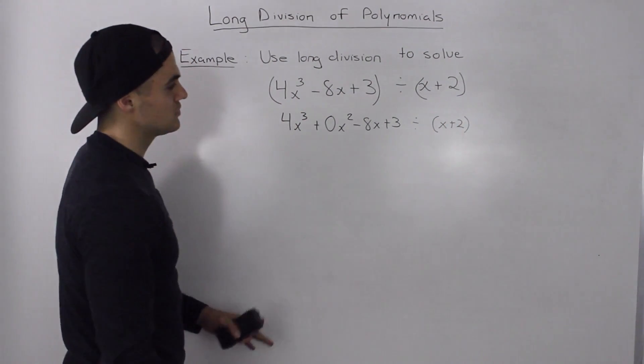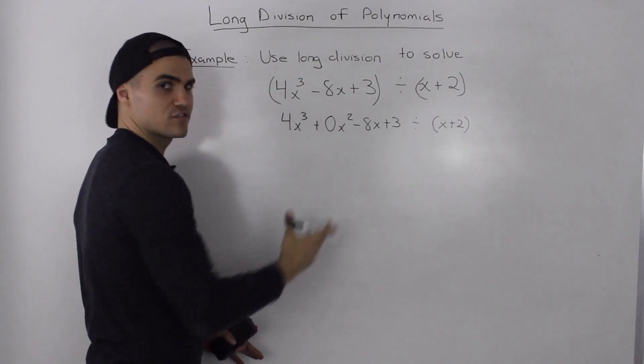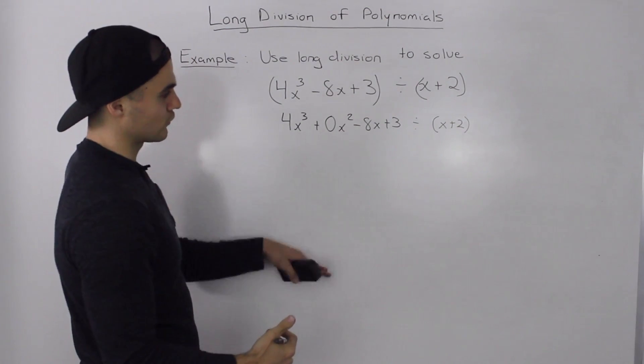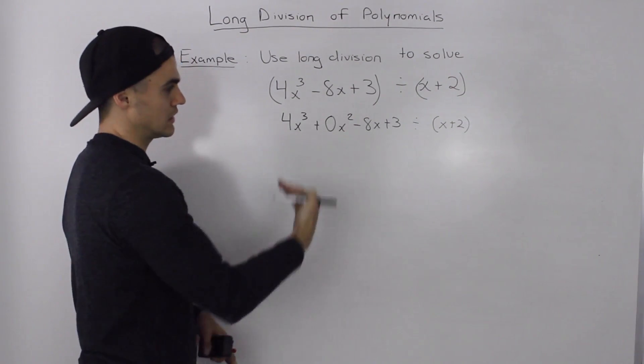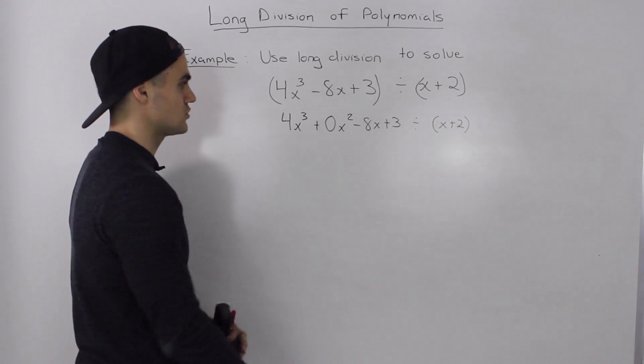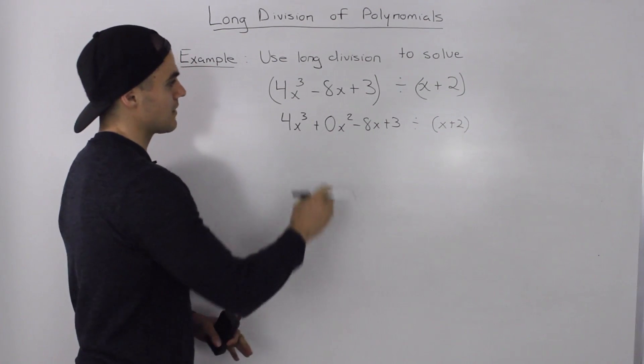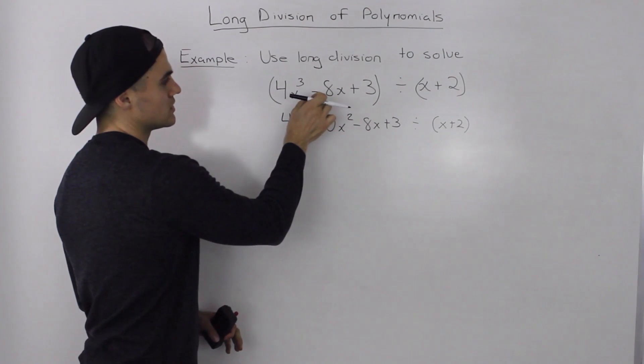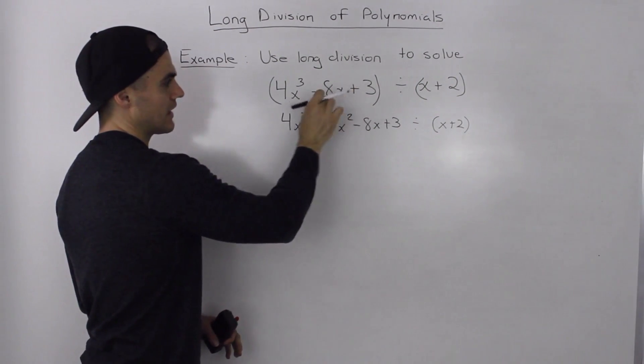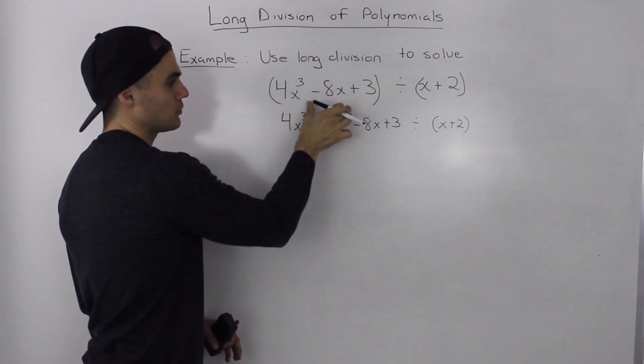So, a recap, any exponents that are missing, any degrees that are missing in the polynomial, whether the dividend or the divisor, you want to rewrite the dividend or the divisor and just sub in a 0 as the leading coefficient for the degree that's missing.